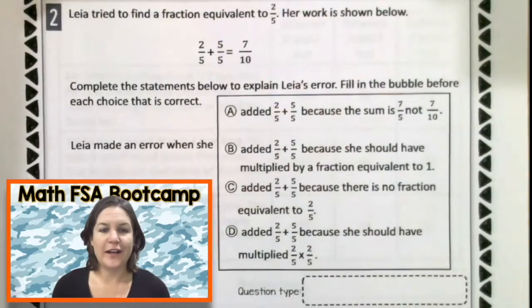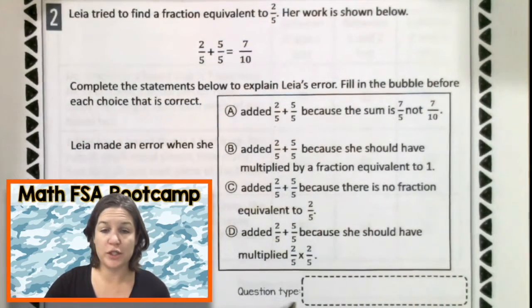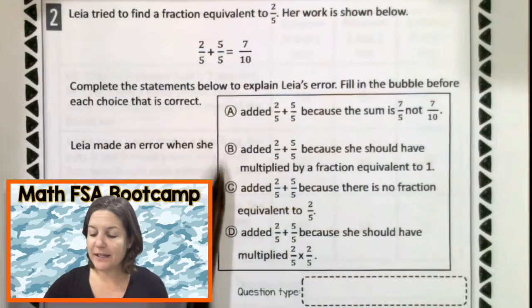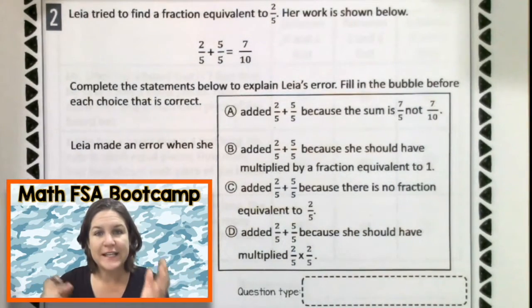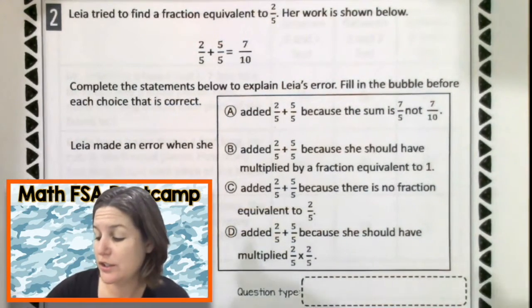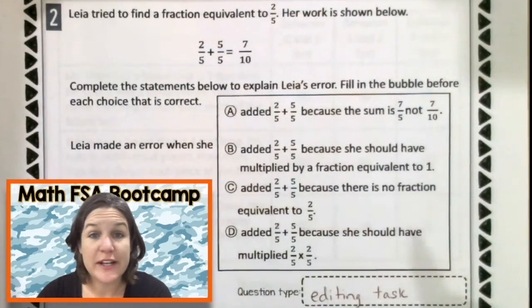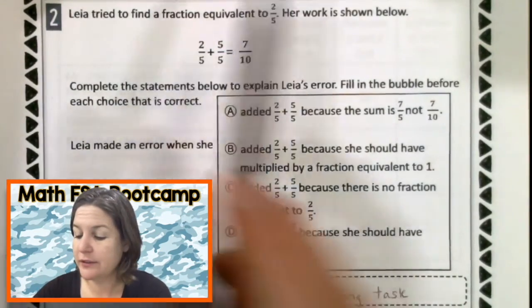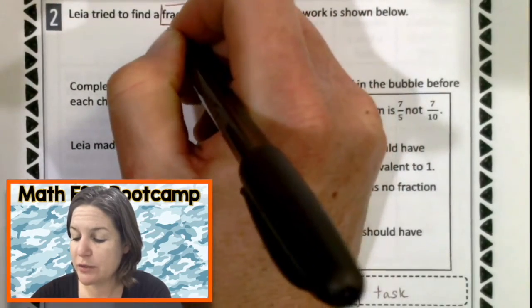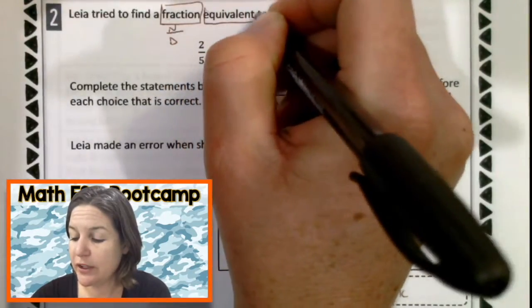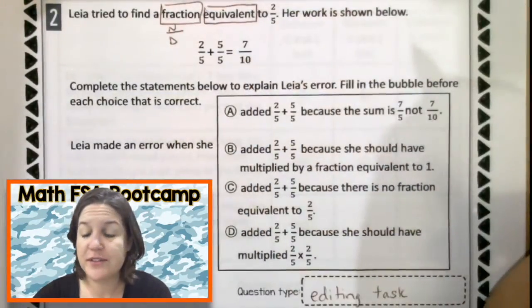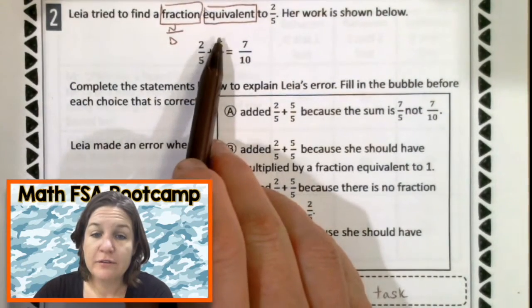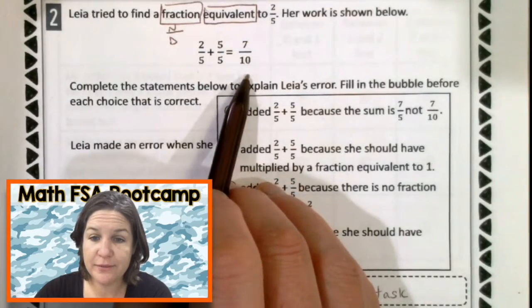Let's take a look at number two. All right, number two, before we even get started, let's identify the question type. So this is, it looks like a multiple choice question because there's four answer choices. However, it is embedded into something where we have to complete a statement. So therefore, this is an editing task question. Write that in if you did not already. And now let's go ahead and read it and mark up our text and make sense of this question. It says, Leah tried to find a fraction. So we got somebody named Leah trying to find a fraction with a numerator and a denominator that is equivalent or equal to two-fifths. Her work is shown below. Oh, okay, so here's two-fifths and it looks like she added five-fifths to get seven-tenths.